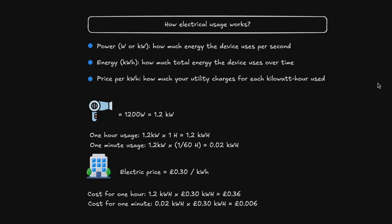Because we are building a home energy tracker, we need to understand how appliances and their electrical usage works. When you see Watt, or W, this is the power — it indicates how much energy the device uses per second. For example, when you buy a hairdryer and it says 1200 Watts, it means that hairdryer uses 1.2 kilowatts of energy per second.